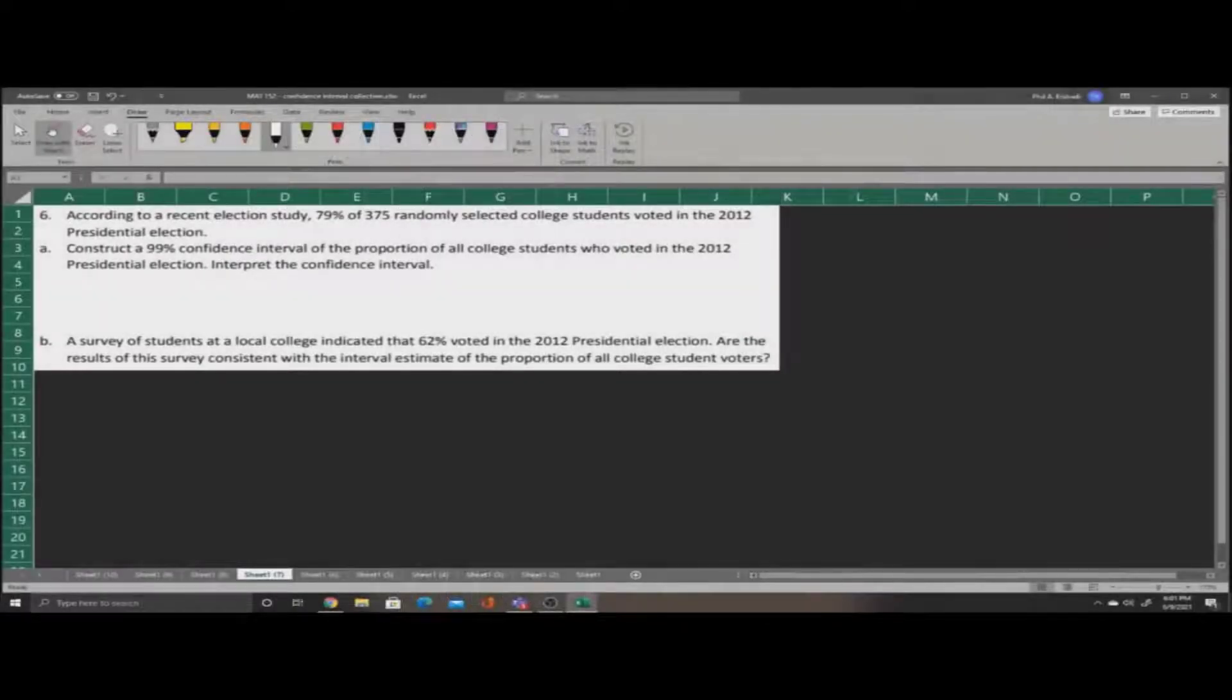In this problem, we are told that according to a recent election study, 79% of 375 randomly selected college students voted in the 2012 presidential election. We are asked to construct a 99% confidence interval for this and interpret it. This is slightly different from the previous problem. This time, we are given a percentage outright, so we already know what p-hat is without having to calculate it ourselves. We are also given that our sample size is 375 and we are given a confidence level directly.